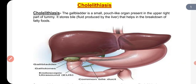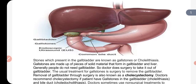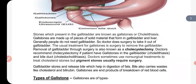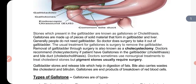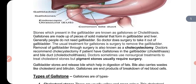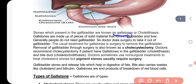The gallbladder is a storehouse for bile. Many times you will hear that stones are present in the gallbladder — the doctor says that you have stones in the gallbladder. When stones are present in the gallbladder, we call them gallstones. This condition is called Cholelithiasis, so our main topic is Cholelithiasis.